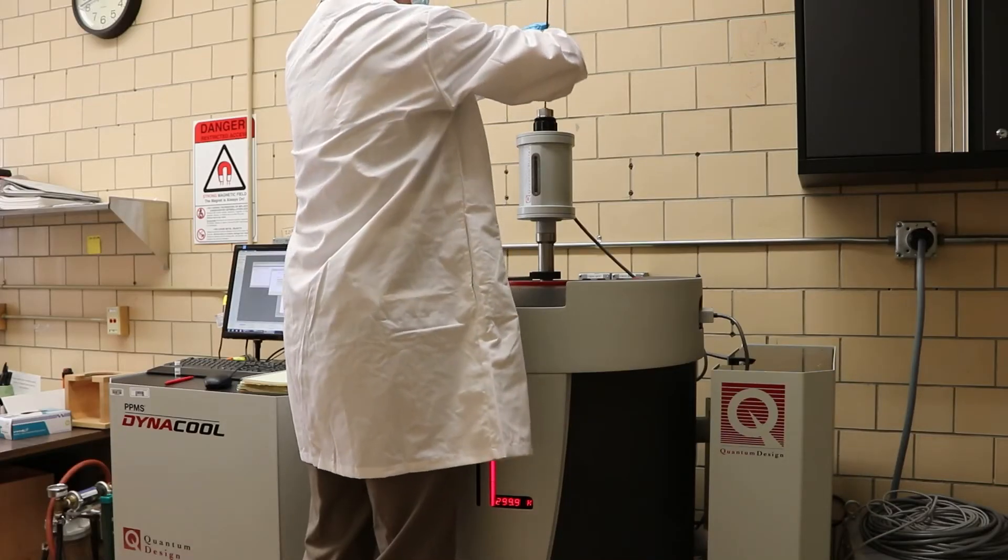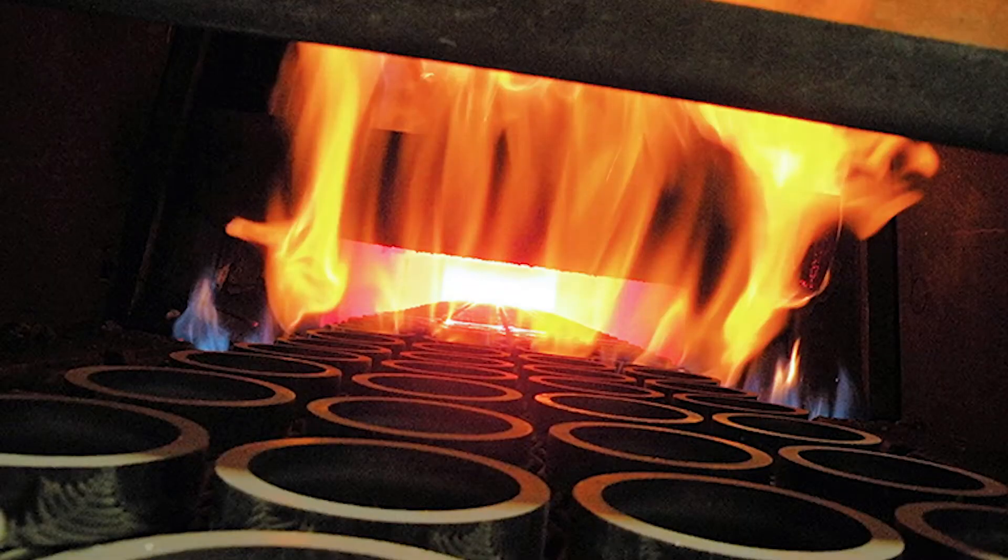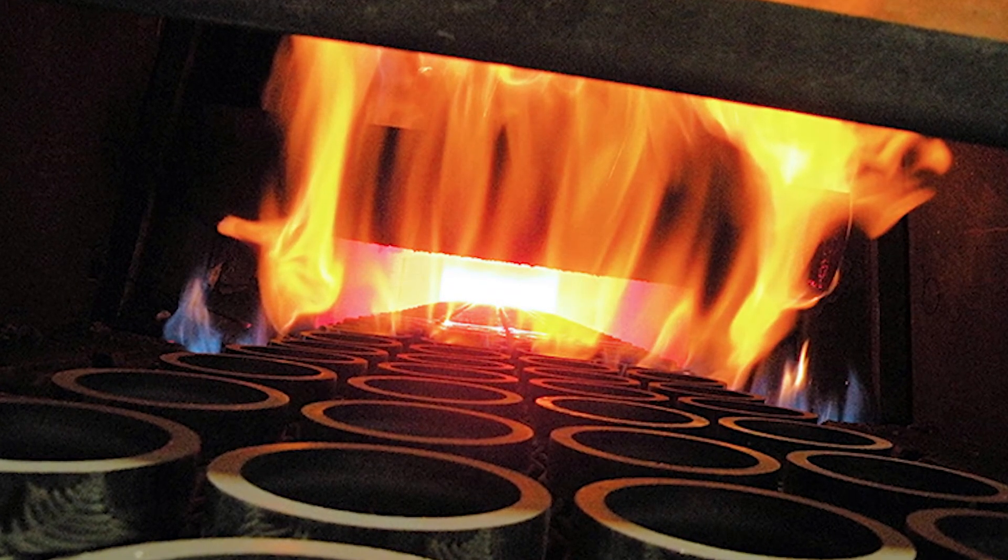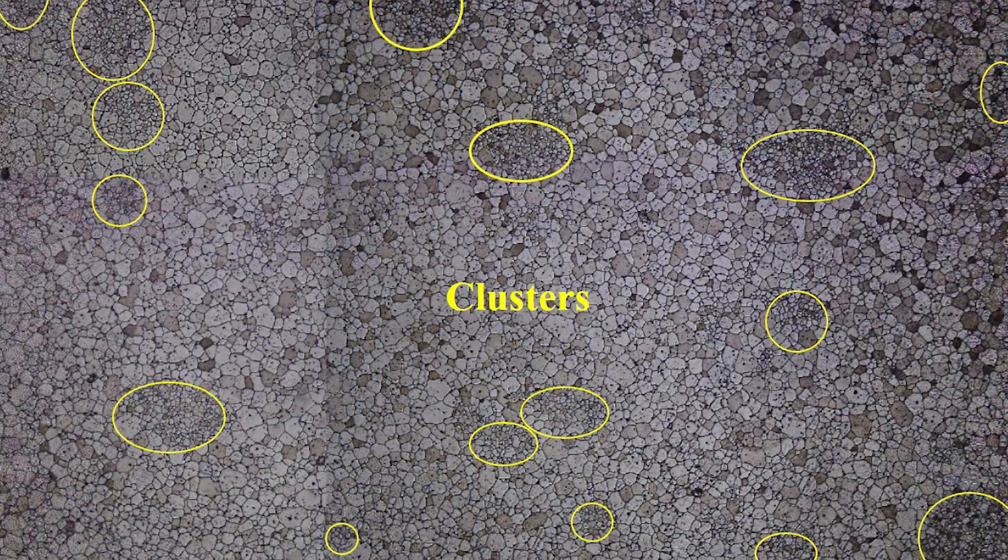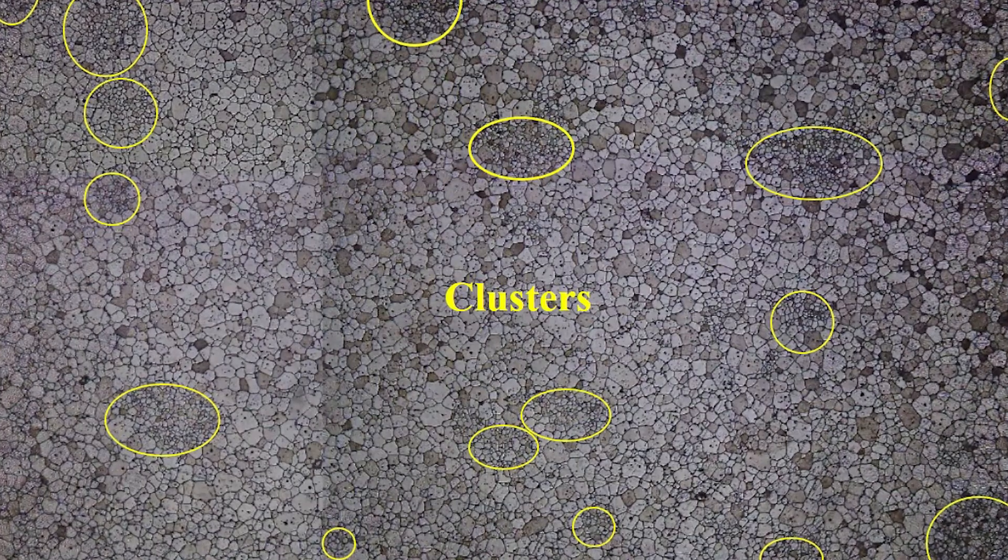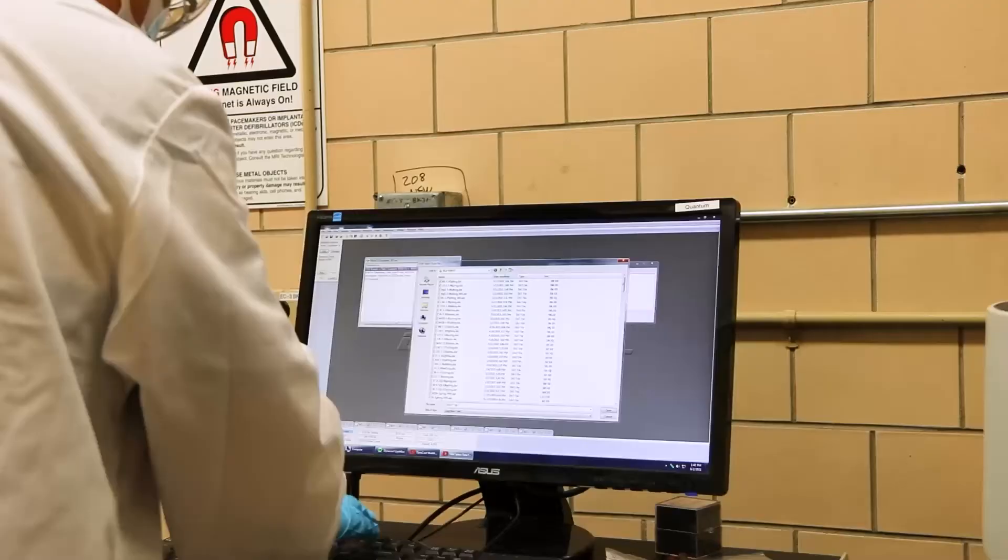The magnets are compacted from metal powders in a process called sintering, and Ames Lab scientists found that adding small amounts of oxide particles caused the formation of tiny clusters of very fine-grained material in the magnet.